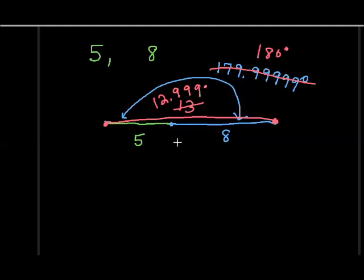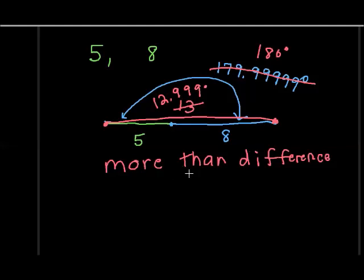Well, what we have here is the idea that a third length has to be more than the difference. So when we had them squished together, we needed it to be more than 3. So, more than the difference. Or it must be less than their sum. Less than the sum. So, let's try this again. A third side has got to be more than the difference, and less than the sum.